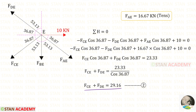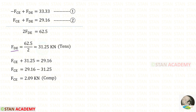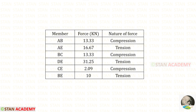We can add equations one and two — FCE will be eliminated. FDE + FDE gives 2FDE. When we add, we get 62.5, so for FDE we will get a positive value — that means it is tensile. Substituting FDE back into the equation, we will get FCE. For FCE we will get a negative value — that means it is compressive. Here I have tabulated all the member forces.